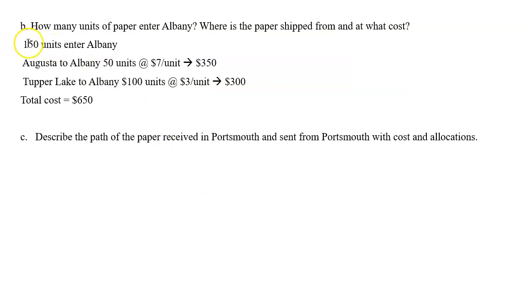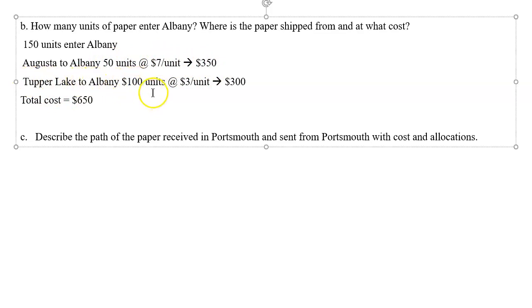You just have to record what was the shipping cost, 7 and 3. A total of 150 units enter Albany. Augusta to Albany, there's 50 units coming in at $7 per unit - 7 times 50 gives you 350 as the cost. Tupper Lake to Albany is 100 units at $3 per unit - 3 times 100 gives you $300. The total cost will be 650.